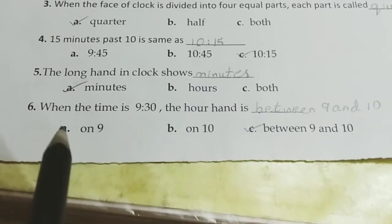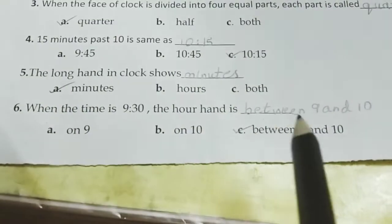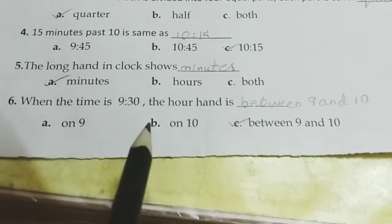When the time is 9.30. When the time is 9.30, the hour hand is dash. When the time is 9.30, 30 minutes past.